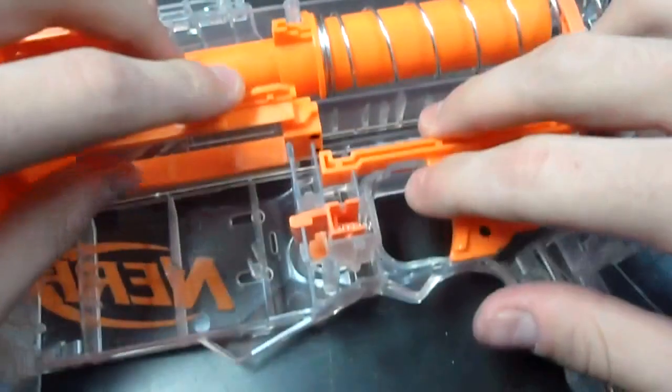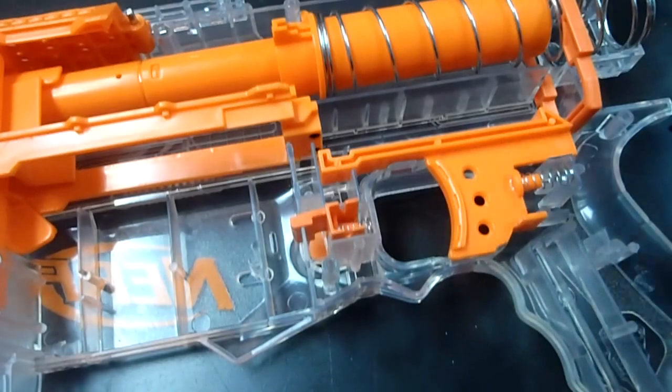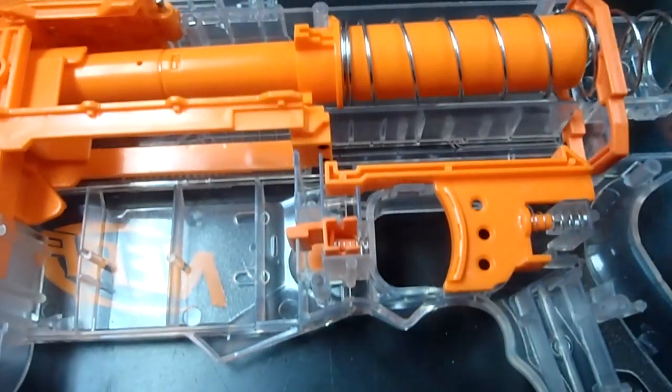Once you've taken the air restrictor out of a blaster, you want to be able to deprime it without having to put a dart in or fire it. Otherwise, you could destroy the back of this plunger tube.